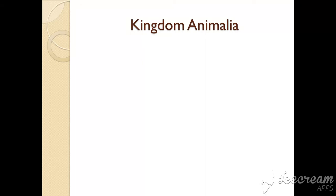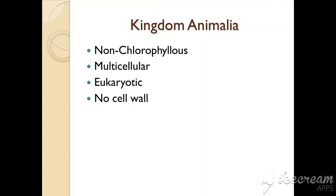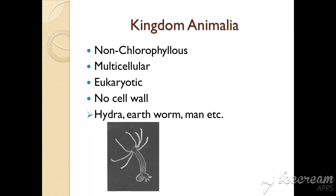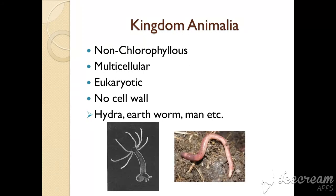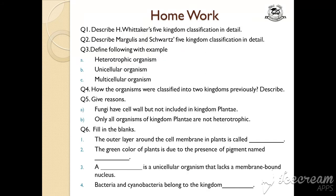Next, kingdom Animalia: non-chlorophyllous, multicellular, eukaryotic, and no cell wall. Examples include hydra, earthworm, man, etc. So this is all about Margulis and Schwartz's classification.